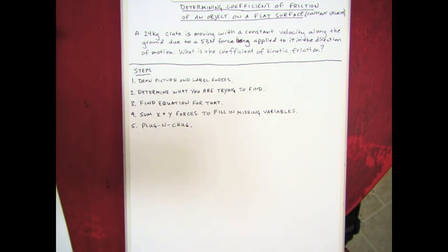In the previous lesson I talked about how to do force diagrams and force equations when you have a situation like this. Here is our problem: We have a 24 kilogram crate moving with a constant velocity along the ground due to a 53 Newton force being applied to it in the direction of motion. What is the coefficient of kinetic friction?